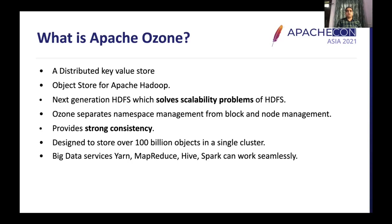What is Apache Ozone? Apache Ozone is essentially a distributed key-value store and is designed as an object store for Apache Hadoop. It was designed to address all the scalability challenges which exist in HDFS today. It has been designed to store hundreds of billions of objects in a single cluster, unlike HDFS which cannot hit the billion limit. Ozone also separates namespace management from block and node management completely, unlike HDFS where a single NameNode manages the complete namespace, block space, and node management.